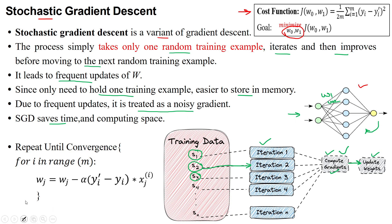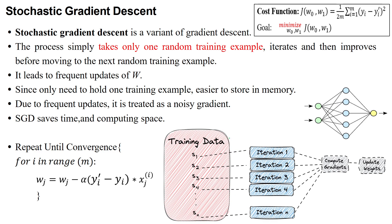In the previous batch gradient descent method, the entire dataset — for example, all 1000 samples — is sent to the network for a single iteration, requiring larger memory to store all those values. In SGD, since only a single sample is taken at a time, much less memory is needed compared to storing all samples in the dataset. So SGD saves both time and computing space compared to the previous method.